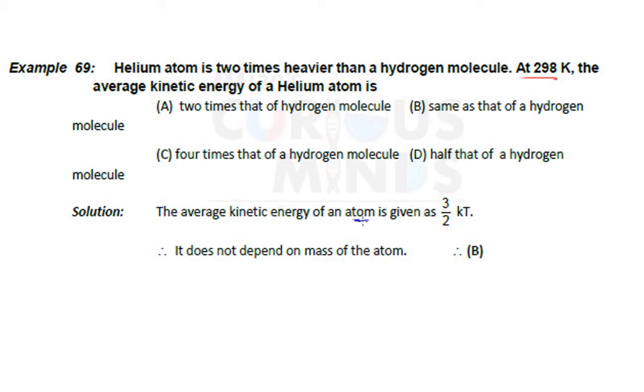...an atom or one molecule is 3/2 KT, where K is the Boltzmann constant, which is R upon Na. R is the gas constant you normally use there.